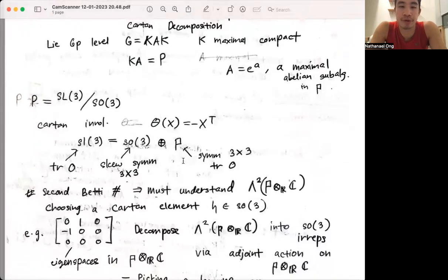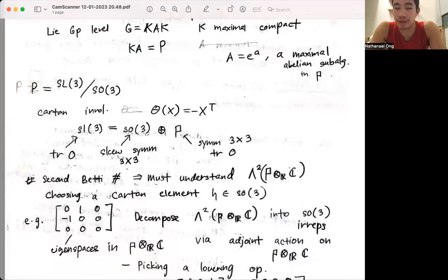Now, we specifically consider this locally symmetric space, SL(3) quotient by SO(3). The Cartan involution is given by taking negative X transpose, where X is a traceless 3×3 matrix. This causes the decomposition of the vector space of traceless 3×3 matrices into skew and symmetric 3×3 traceless matrices, as shown below.